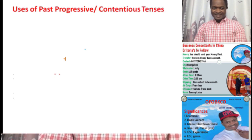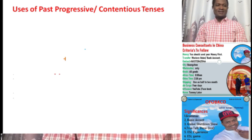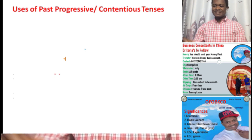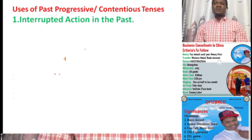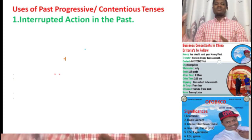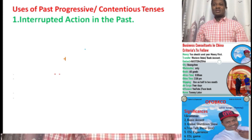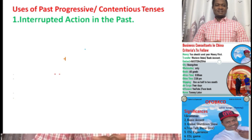Uses of past progressive — sometimes we say past continuous tenses. Let's talk about the uses of past progressive or past continuous tenses. One of the uses is interrupted action in the past: the action that is going on in the past but interrupted by the past simple. That was interrupted action in the past, one of the uses of the past progressive or past continuous tenses.